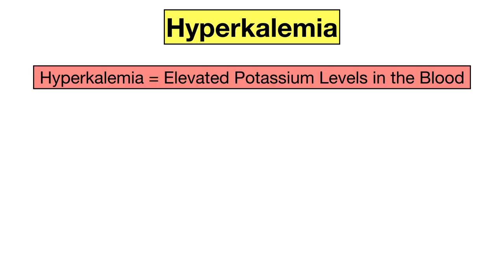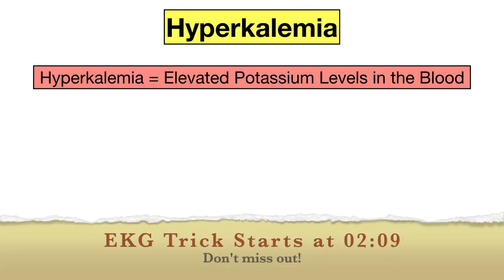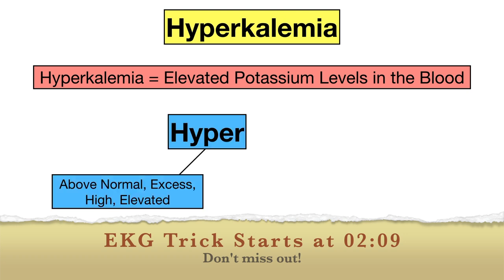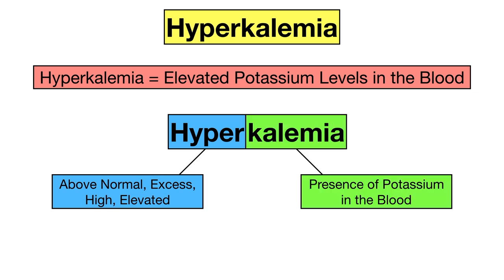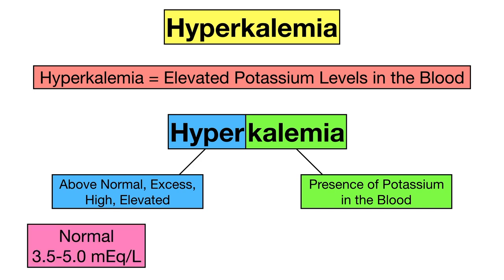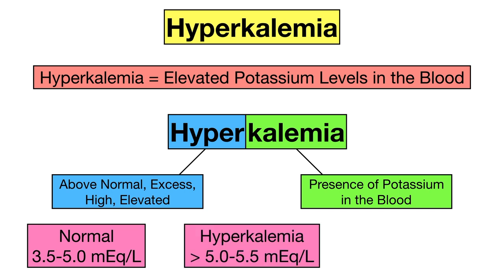Hyperkalemia is a medical term that means higher than normal potassium levels in the blood. We know from our medical terminology videos that hyper means above normal, excess, high, or elevated, and kalemia means the presence of potassium in the blood. So hyperkalemia refers to elevated levels of potassium in the blood. The normal range of potassium for most labs is about 3.5 to 5, meaning a value greater than about 5 to 5.5 will be considered high.